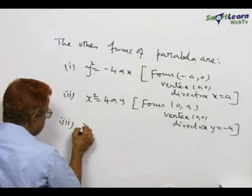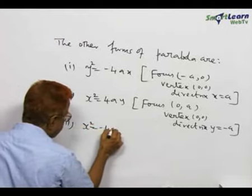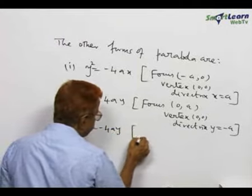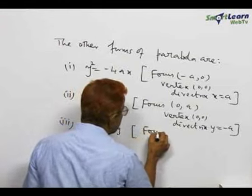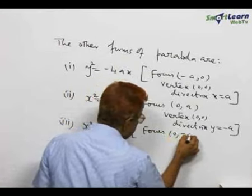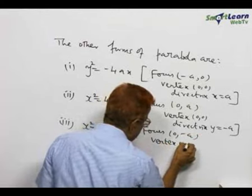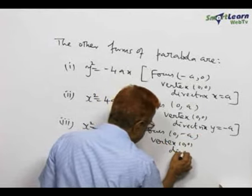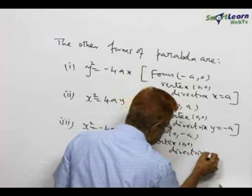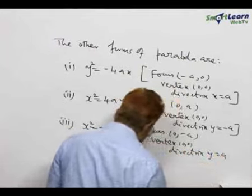(3) x square equal to -4ay, focus (0,-A), vertex (0,0), directrix y = A.